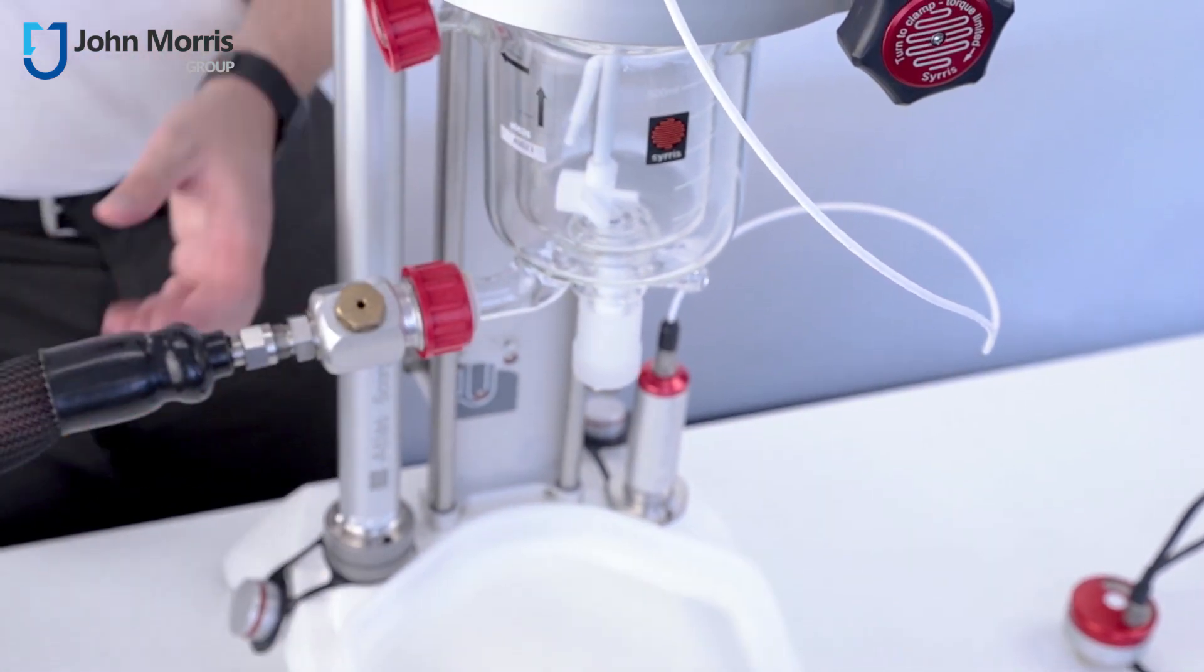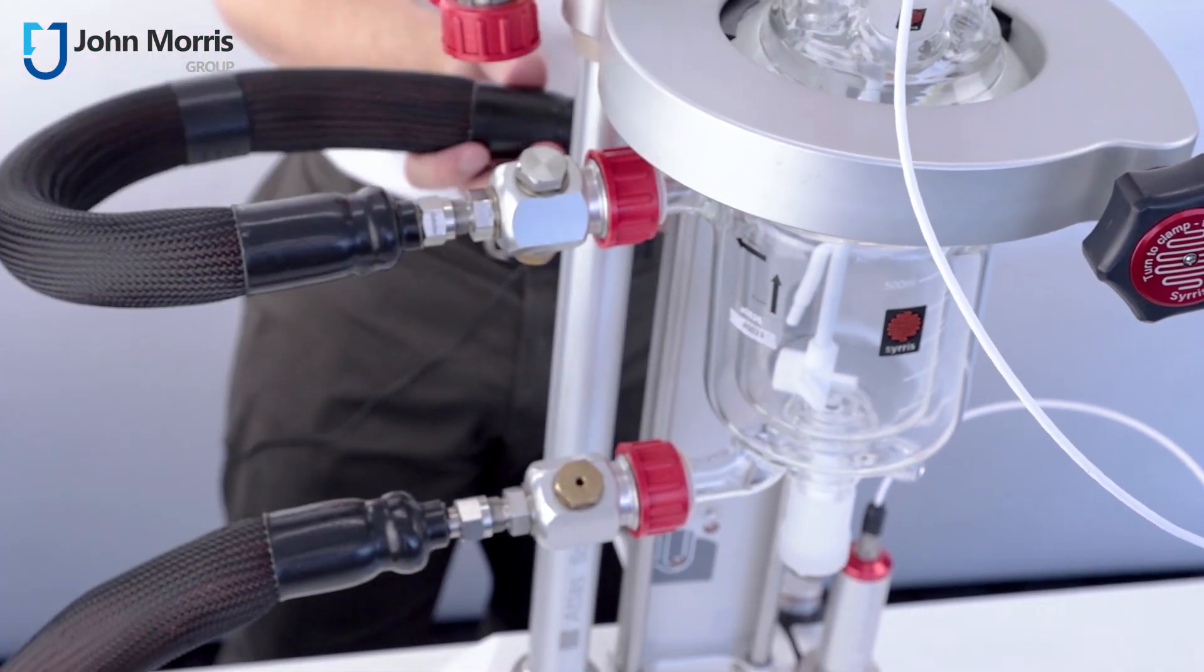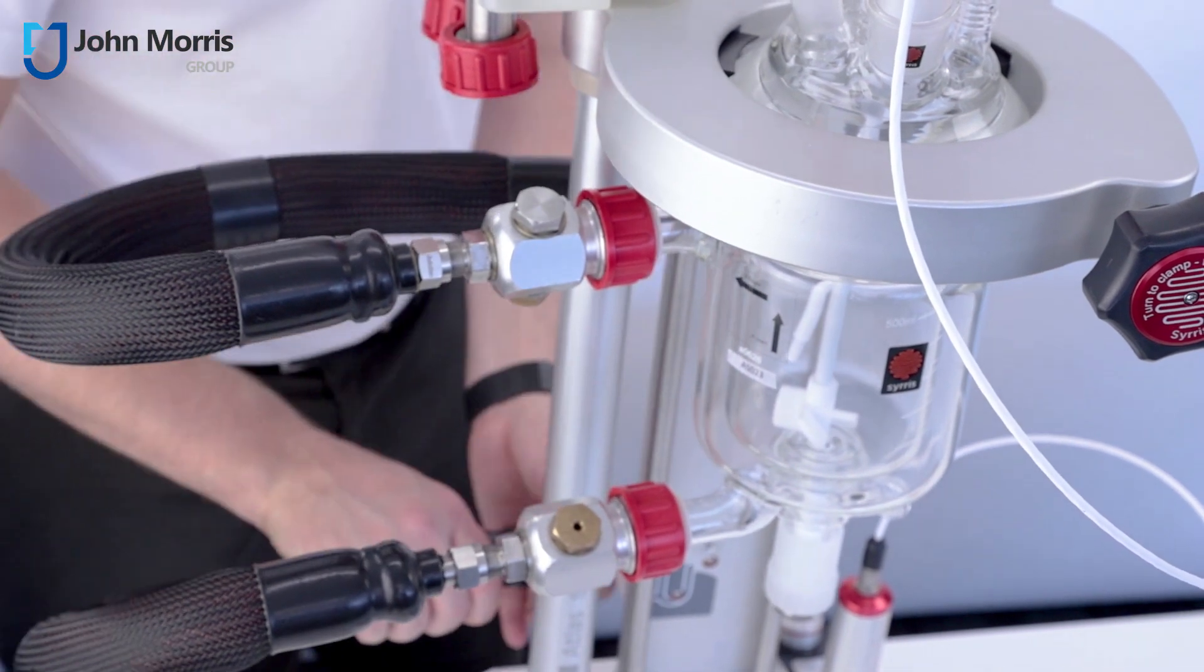You can have precise temperature control in the range from minus 90 up to plus 250 degrees Celsius using an external temperature controller such as a Julabo Presto series.